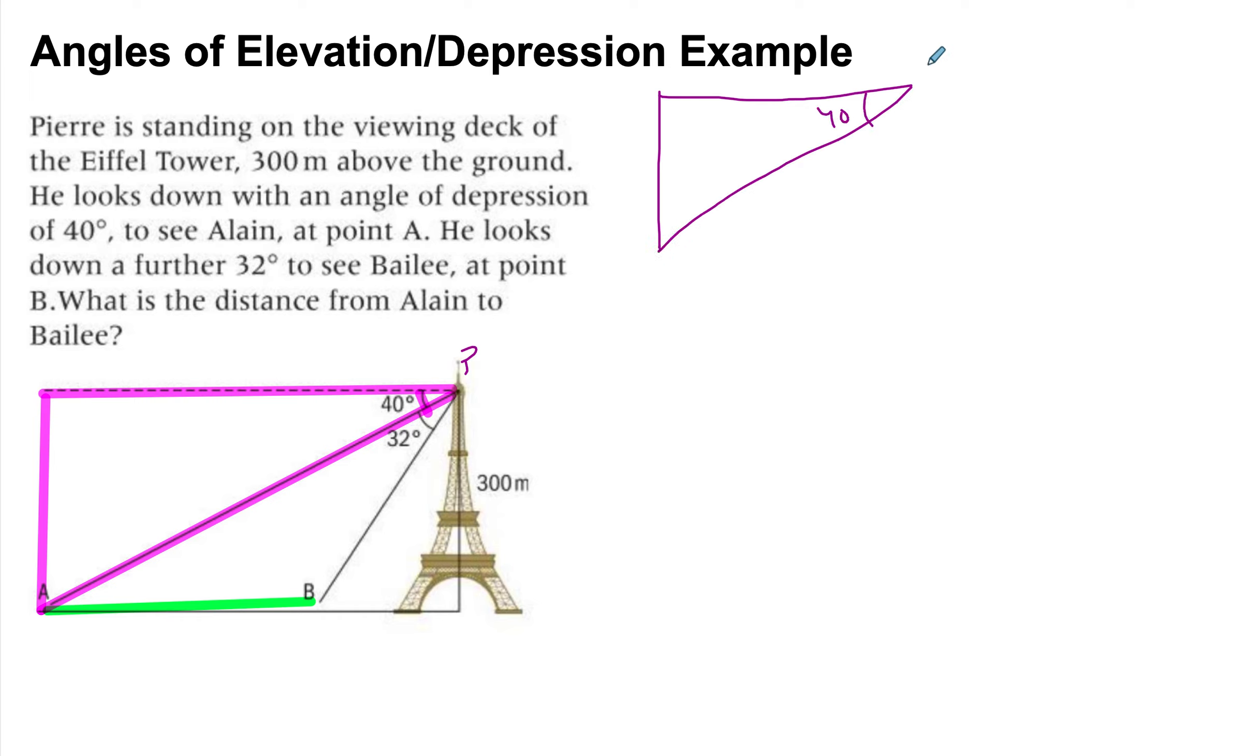So this is our 40, this is Pierre, this is Alain, this is 90 degrees, and we have other things. We have that the height is 300.